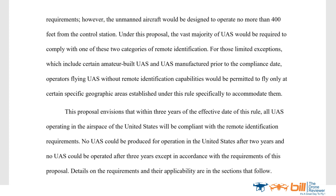For limited exceptions — which include certain amateur-built UAS and UAS manufactured prior to the compliance date — operators flying UAS without remote identification capabilities will be permitted to fly only in certain specific geographic areas established under this rule. This proposal envisions that within three years of the effective date of the rule, all UAS operating in the United States will be compliant. No UAS could be produced for operation in the United States after two years, and no UAS could be operated after three years except in accordance with the requirements of this proposal.